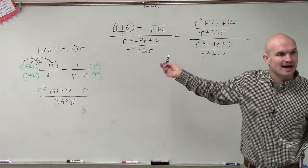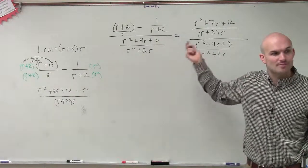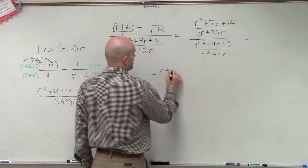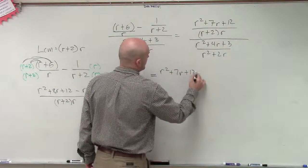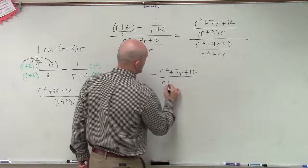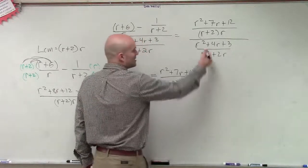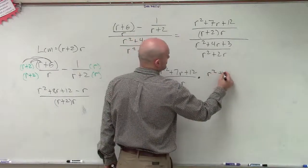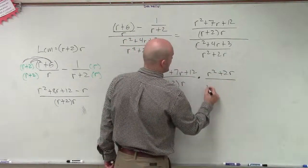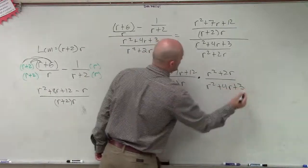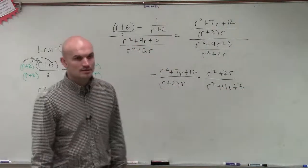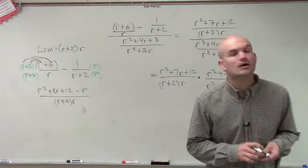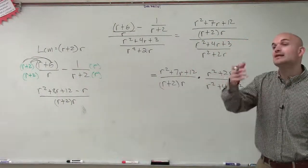And we remembered what to do to divide. When dividing, we flip and multiply. So what we're going to do is I'm going to have r squared plus 7r plus 12 divided by r plus 2 times r multiplied by, now, the reciprocal of my divisor, which would be r squared plus 2r divided by r squared plus 4r plus 3. Does everybody see that or have any questions on that? Yes, Alex? No? Does everybody see what I did and have an understanding?